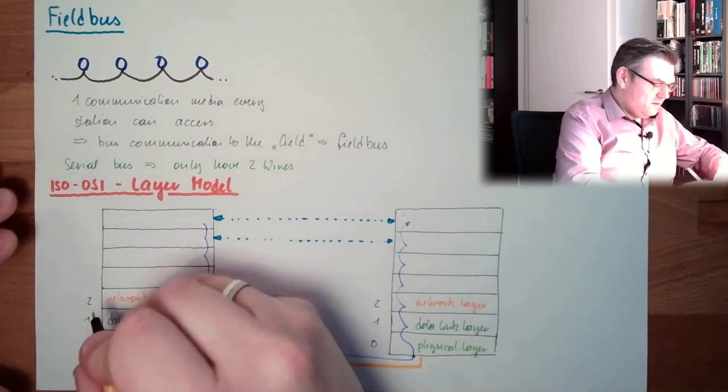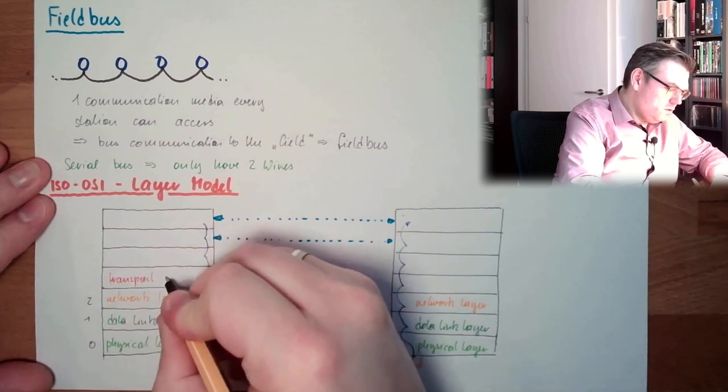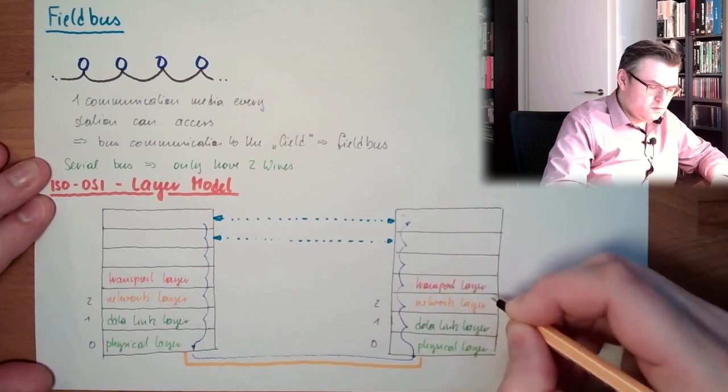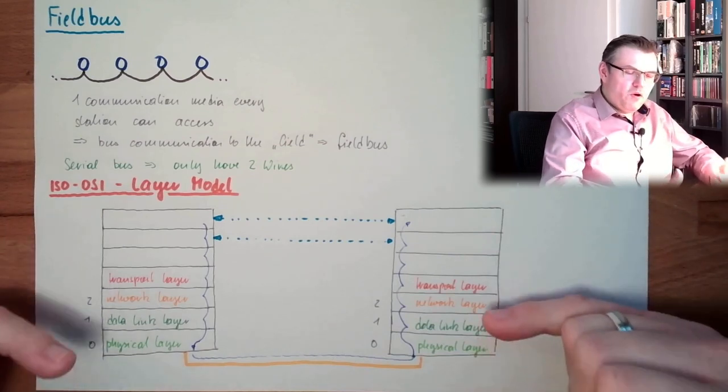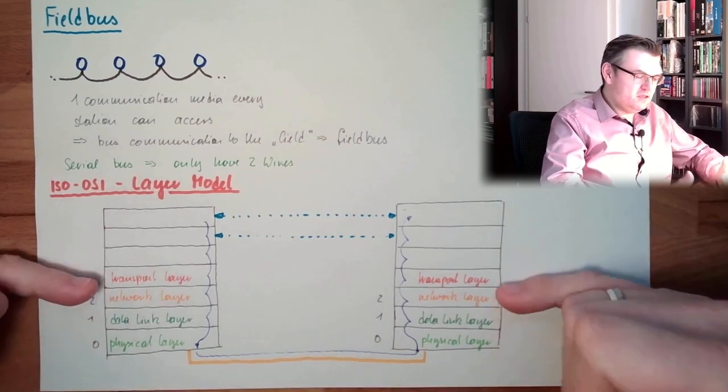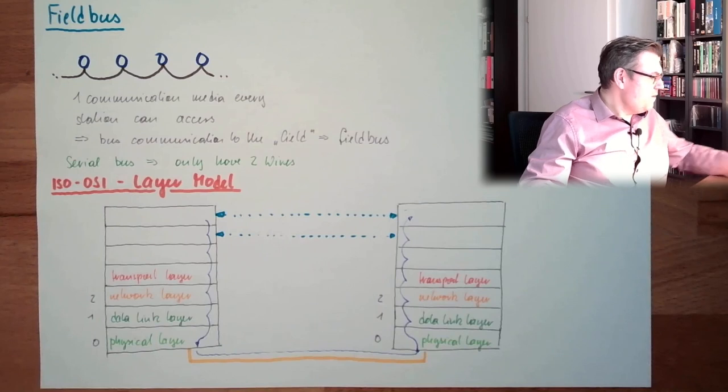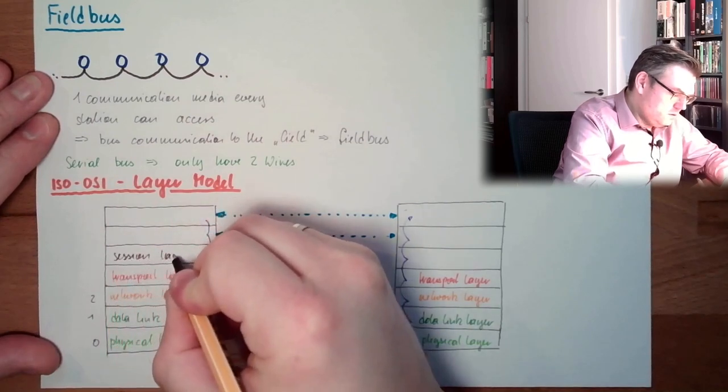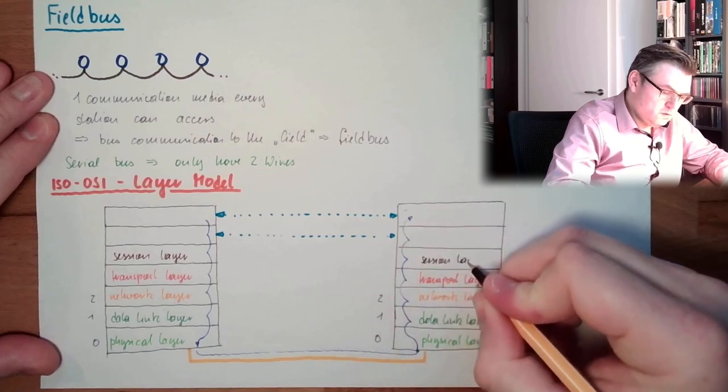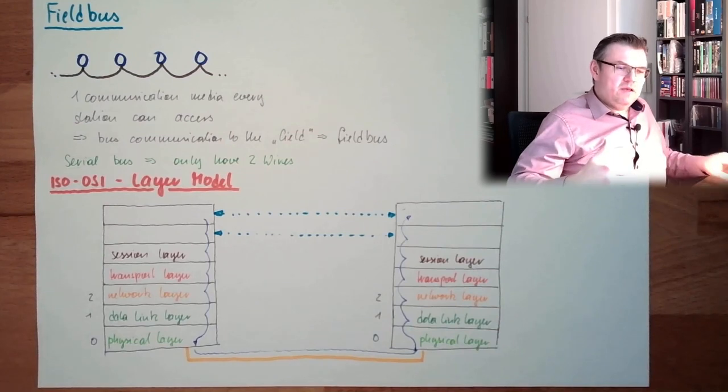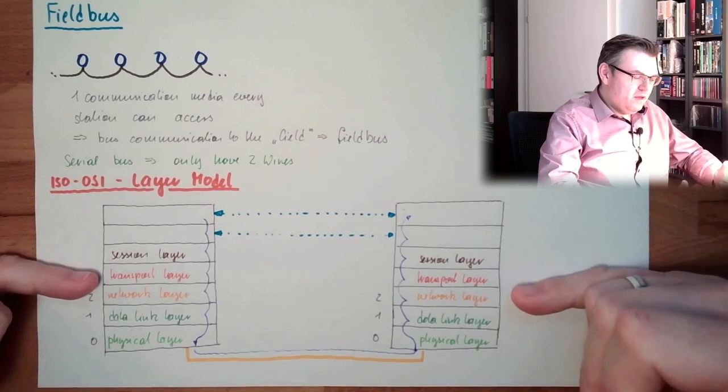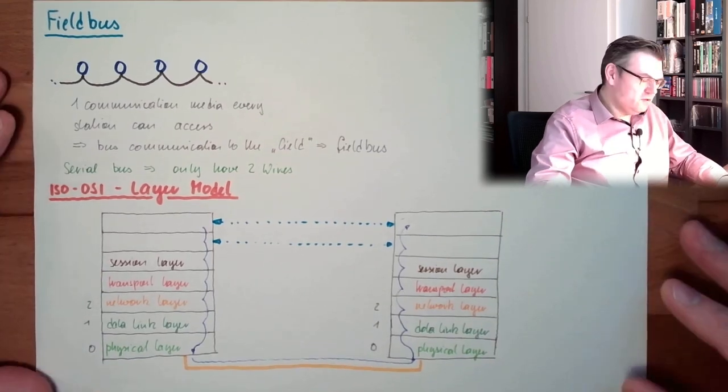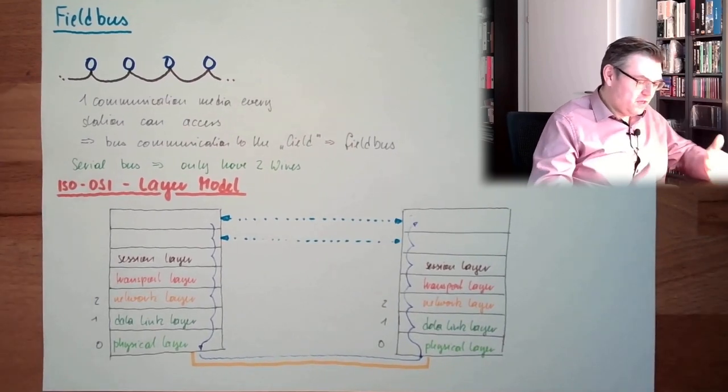Then there is the transport layer. This is building a permanent communication channel. This is sending packages, building a communication channel. Then we have the session layer. The session layer makes one session of a communication. If the line is terminated, the session layer takes care that it can proceed from a certain state. So we can restart the communication.